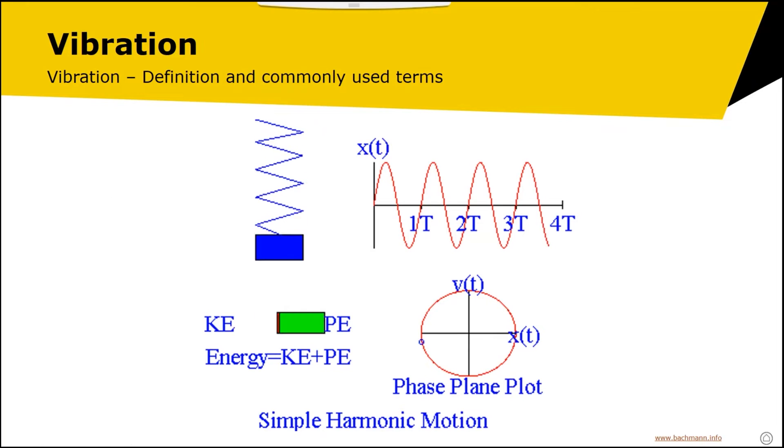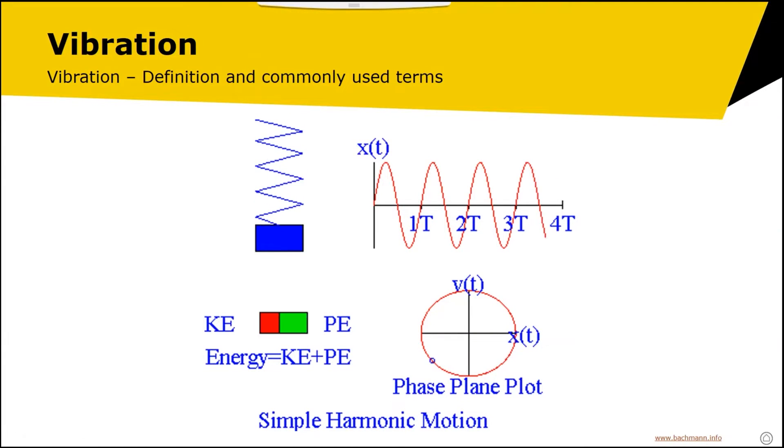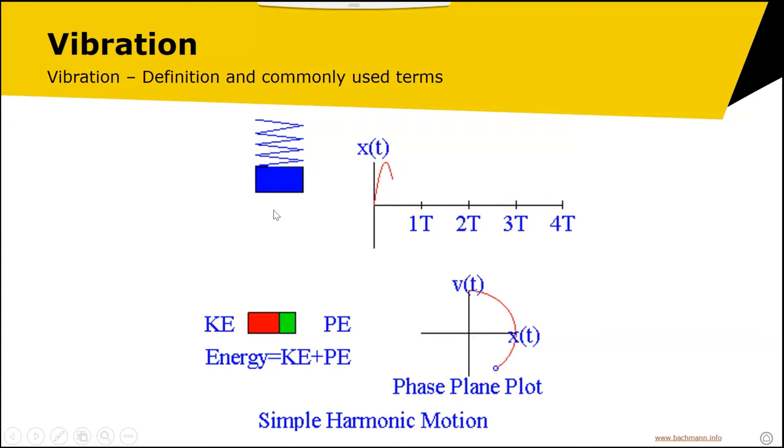Our displacement x varies with time. As the displacement varies with time, so does the velocity, but the velocity is changing out of phase with the time. If you think about the speed of the spring, it's going at its maximum speed as it goes through the equilibrium point.